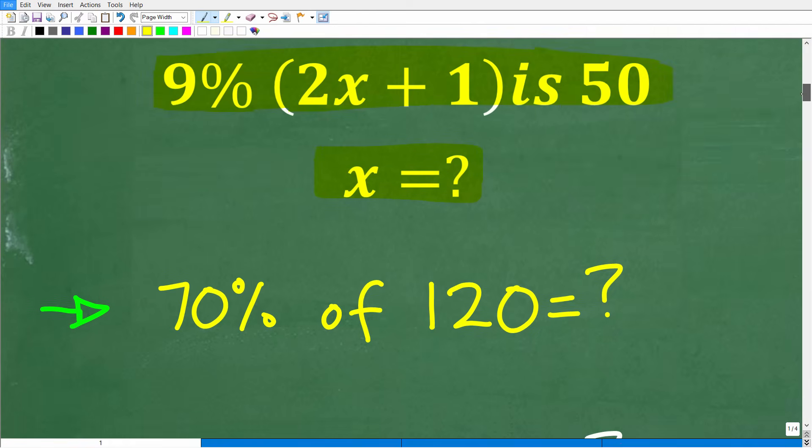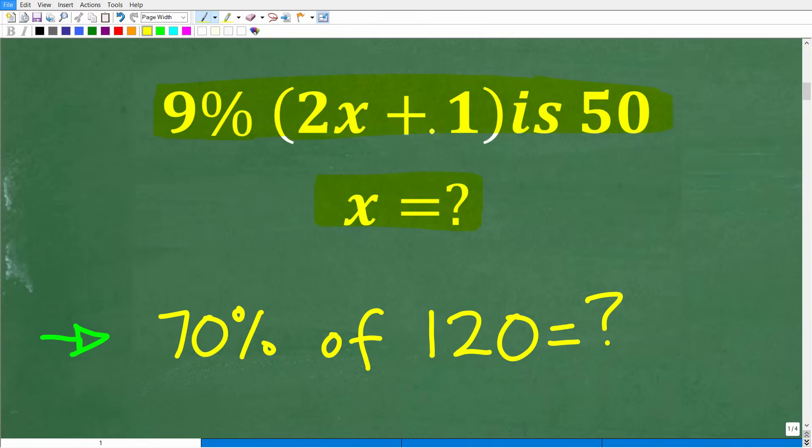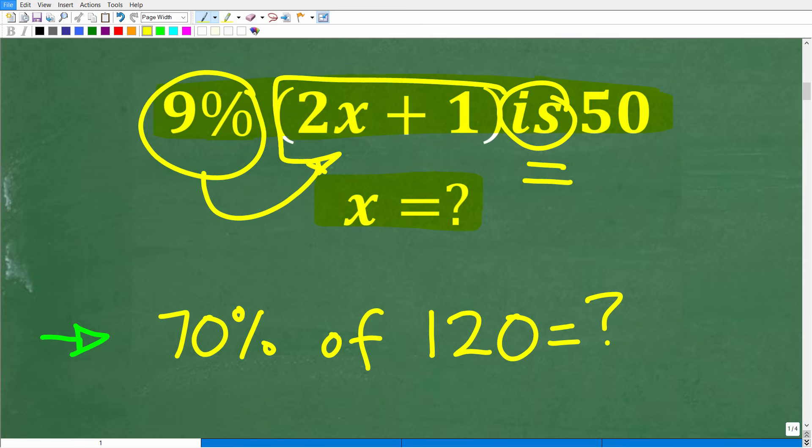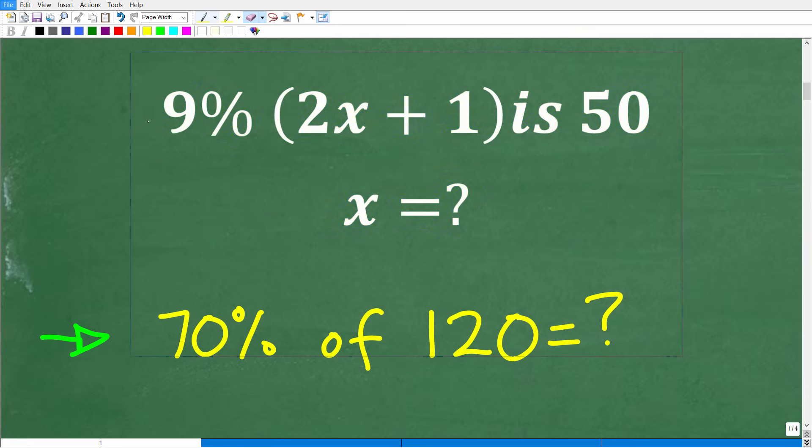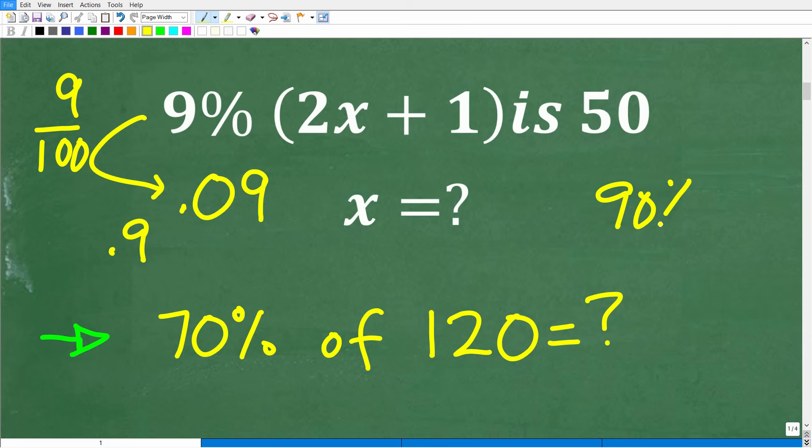Let's take a look at how we can express the relationship between all these numbers. 70% of 120 is 84. That word 'is' in mathematics means the equal sign. Now let's go back to our problem. We have 9% of 2x plus 1 is 50. So this 'is' is actually an equal sign. We're taking 9% of this number. We would literally just do the same thing. We take this 9% and write this as a decimal. That would be 0.09, or 9 divided by 100.